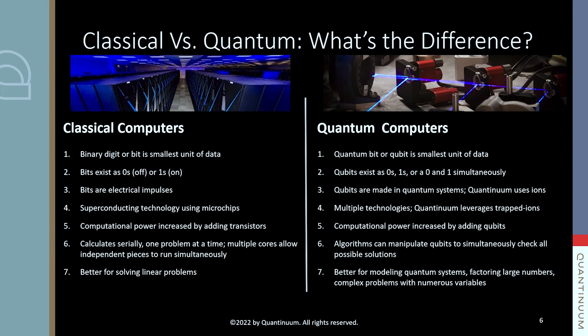Whereas quantum computers act quantumly. And so you can actually create a very close approximation to how these molecules work in the real world. And so the promise of quantum computing is that as these quantum computers scale, you'll be able to not just help develop life-saving drugs faster, but you might actually be able to tailor those drugs to an individual person. That's the kind of capability that could eventually come with a quantum computer.